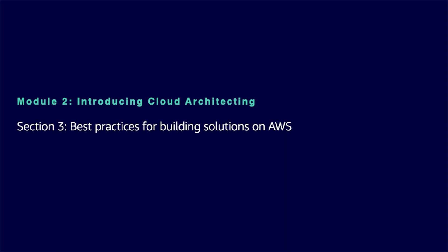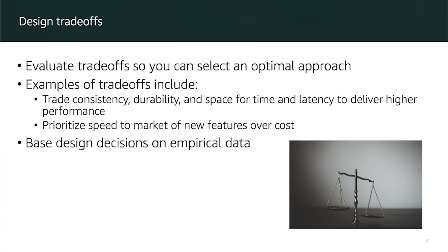So what are the best practices for building solutions on AWS? As you design a solution, think carefully about trade-offs so that you can select an optimal approach. For example, you might trade consistency, durability, and space for time and latency to deliver higher performance, or you might prioritize speed to market over cost. Trade-offs can increase the cost and complexity of your architecture, so your design decisions should be based on empirical data. You might need to perform load testing or benchmarking to achieve the most cost-optimal workload over time.